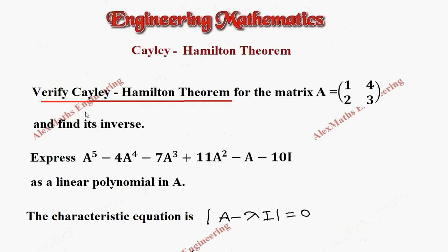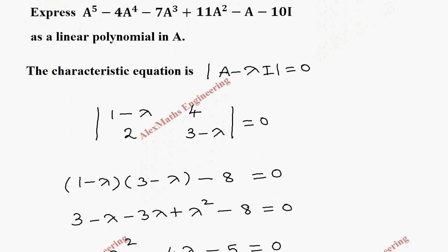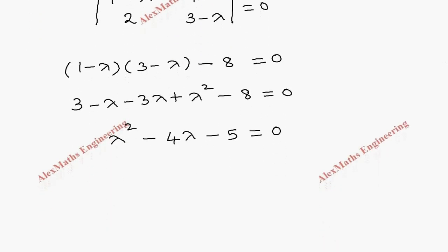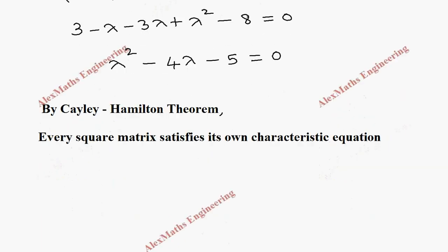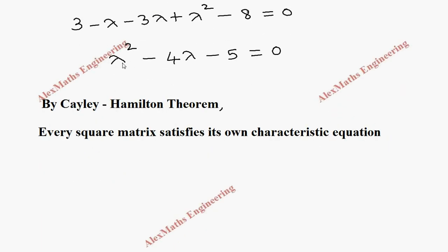Now, by the Cayley-Hamilton theorem, every square matrix should satisfy its own characteristic equation. Therefore, in place of lambda, we are going to substitute matrix A. So it will become A squared minus 4A minus 5I equal to 0. Whenever there is a constant, we have to put the identity matrix as a product with that.